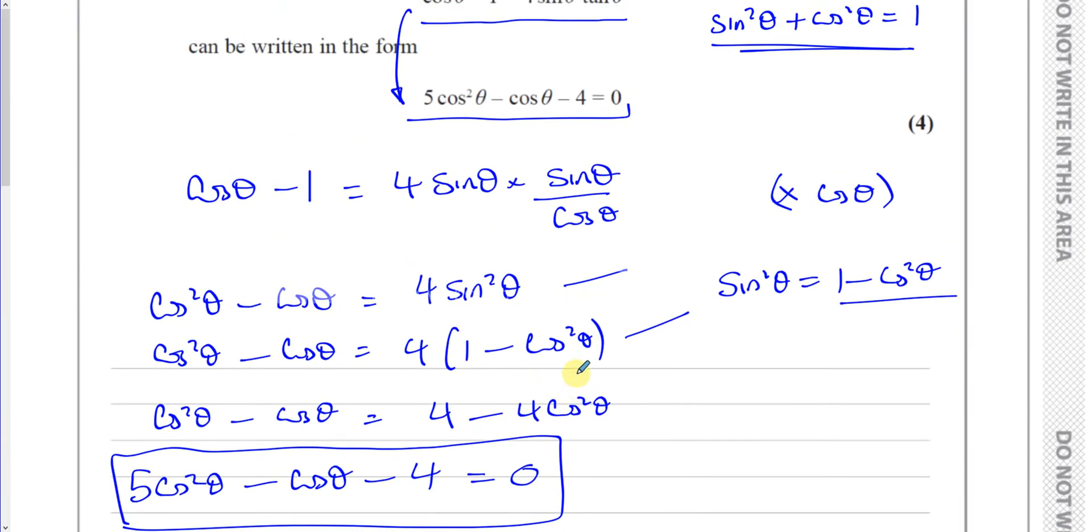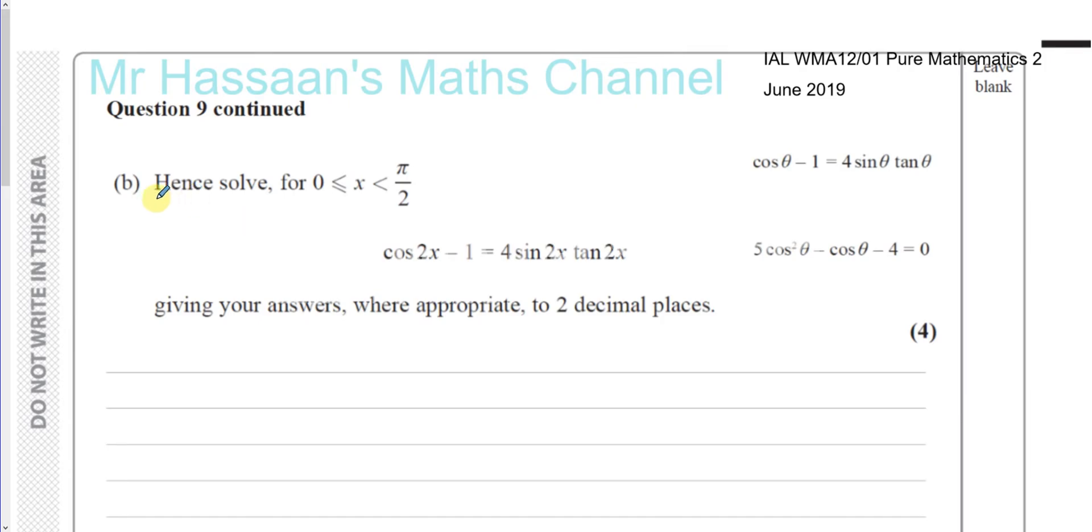Now part B of question number 9. It tells us hence, means using what we just found. Solve for x between 0 included up to pi over 2. The equation cosine 2x minus 1 equals 4 sine 2x tan 2x. Now what you notice is, this is what we had on the other page. This and that are the same form except theta has been replaced by 2x. So what we can do is, we can use what we've already done, and just rewrite this in this form, just replacing the theta with 2x. So we can say that this means you've got 5 times cosine squared 2x minus cosine of 2x minus 4 equals 0. We're going to solve this.